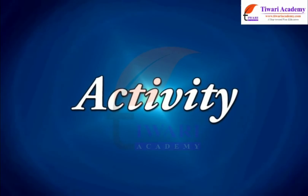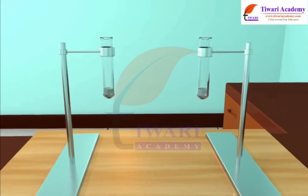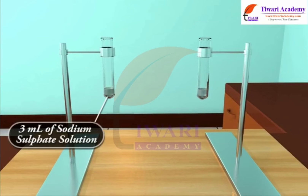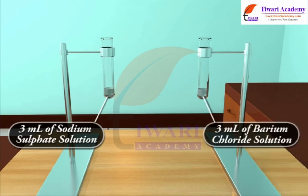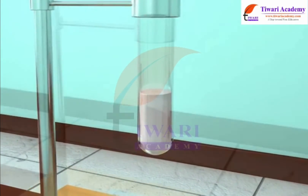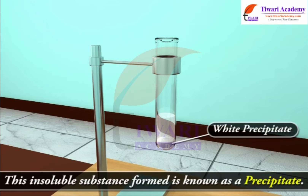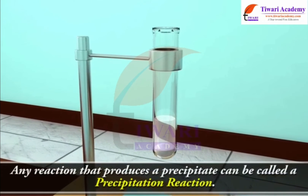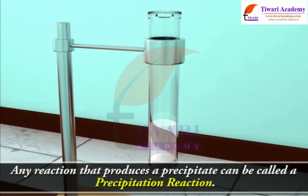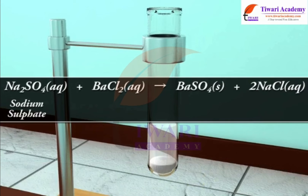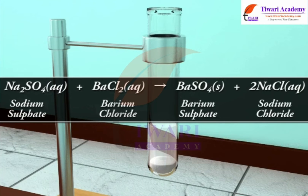Let us do an activity. Take about 3 ml of sodium sulphate solution in a test tube, and in another test tube take about 3 ml of barium chloride solution. Mix the two solutions. You will observe that a white substance insoluble in water is formed — this is known as a precipitate. Any reaction that produces a precipitate is called a precipitation reaction: Na2SO4(aq) + BaCl2(aq) gives BaSO4(s) + 2NaCl(aq).